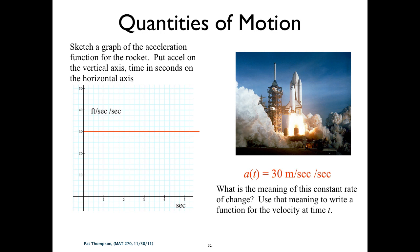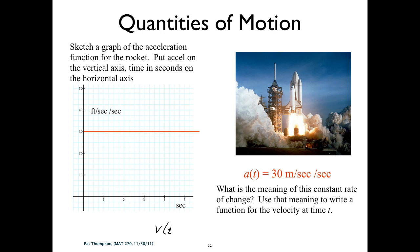Given any change in time, the change in velocity is 30 times that change in time. If you're thinking about the change in time from zero, we can just call that t. So the velocity function: V of t is 30t. Given any change in time t, the velocity is 30 times the change in time — 30t.